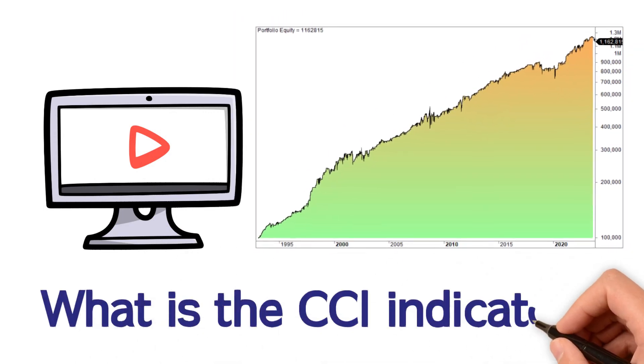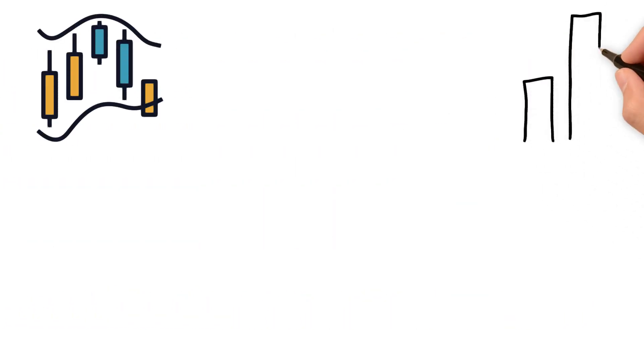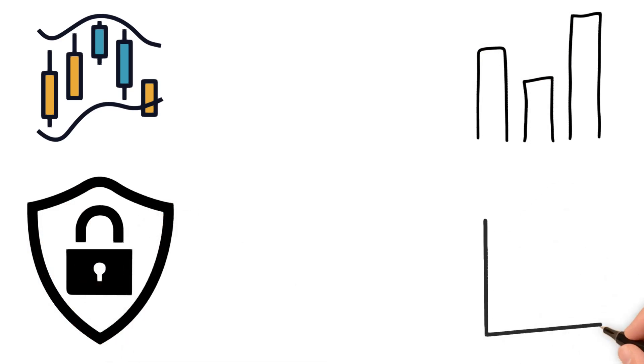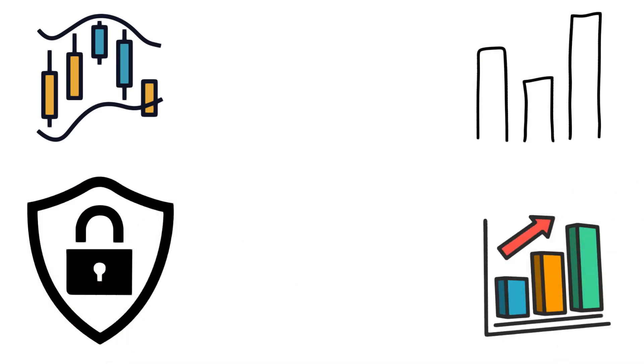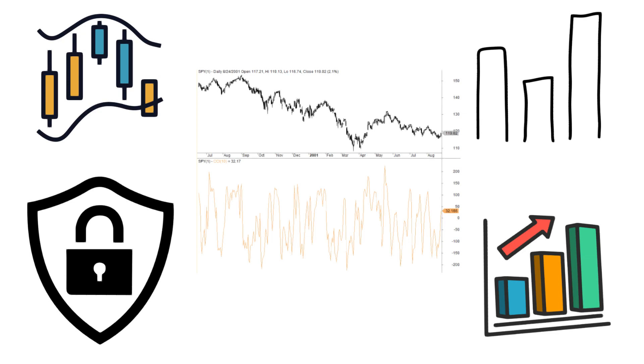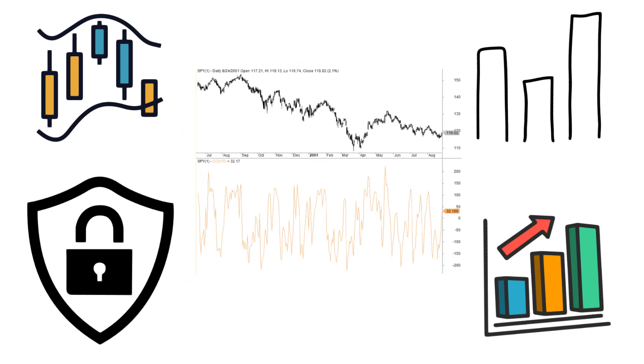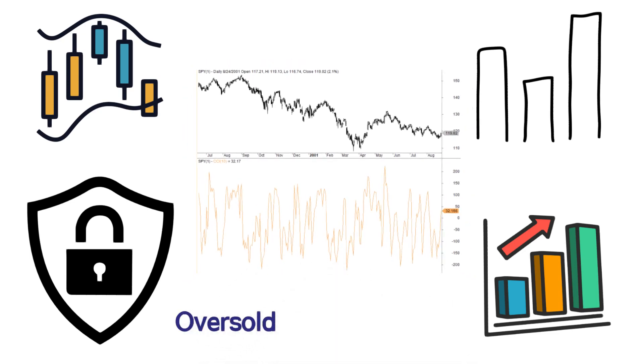What is the CCI Indicator? It's a technical indicator that measures the current price level of a security relative to an average price level over a given lookback period. It's a momentum oscillator that's used to identify extreme conditions such as oversold and overbought conditions.